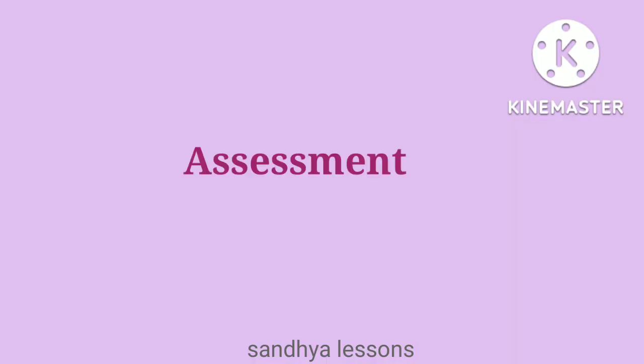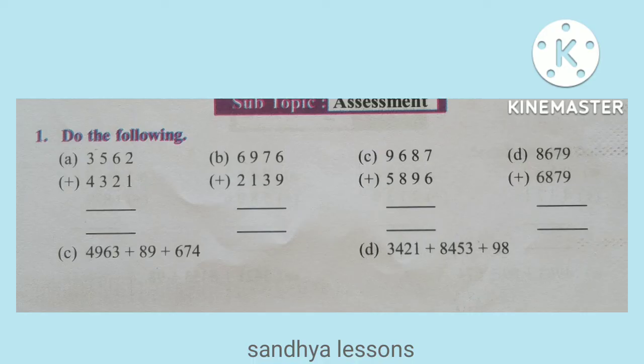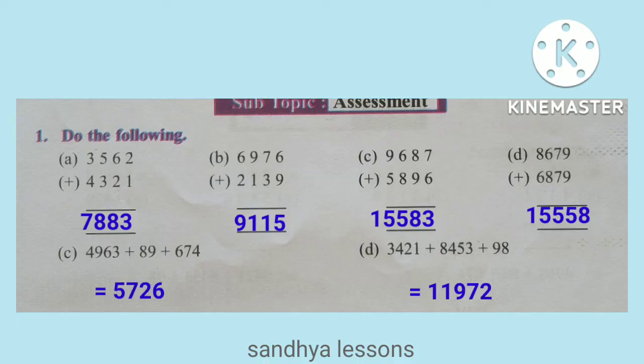Assessment, Problem 1: Do the following. 3,562 plus 4,321 gives 7,883. 6,976 plus 2,139 gives 9,115.